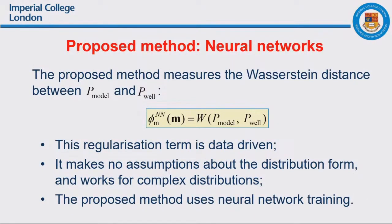This leads to the proposed method. We measure the distance between the two probabilities — not just divergence, but distance. The N here represents a neural network. This regularization term is actually data-driven, based on the data properties. One key property of this method is that there are no assumptions about the distribution form; therefore it works for complex distributions. We use neural network training to obtain the weights W — it is not a simple numerical calculation.